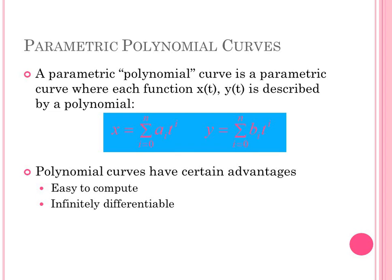A parametric polynomial curve is a parametric curve where each function x(t) and y(t) is described by a polynomial — x equals the sum of aᵢtⁱ for i from 0 to n, and similarly y equals the sum of bᵢtⁱ. The advantage of using polynomial curves is that they are easy to compute and also infinitely differentiable, meaning we can find the first, second, third derivatives and so on of these polynomial equations.